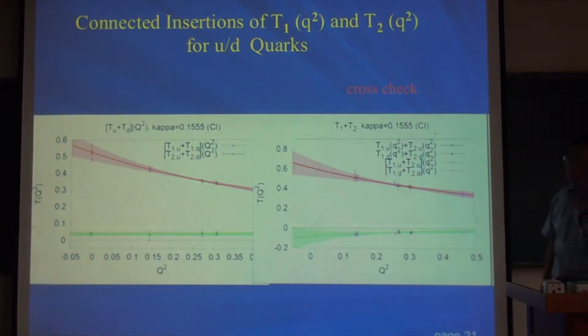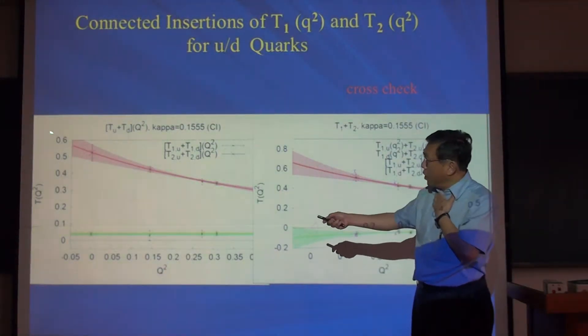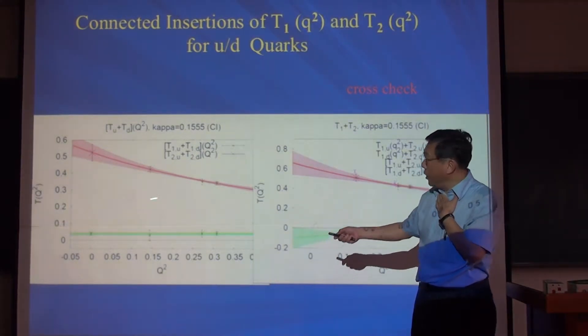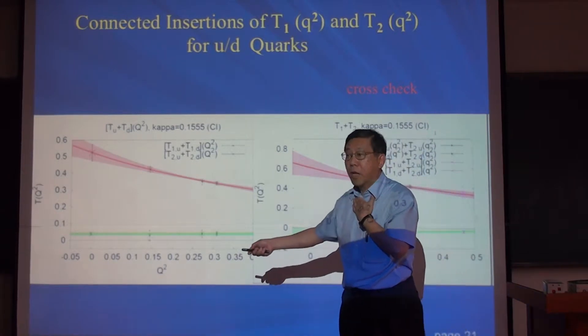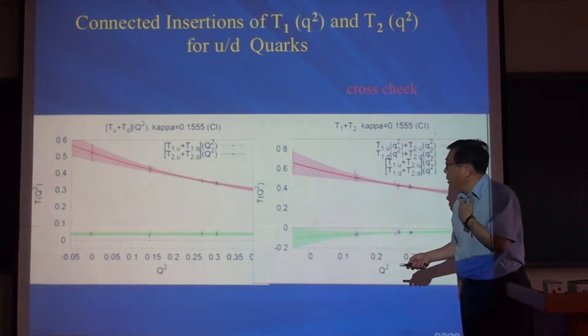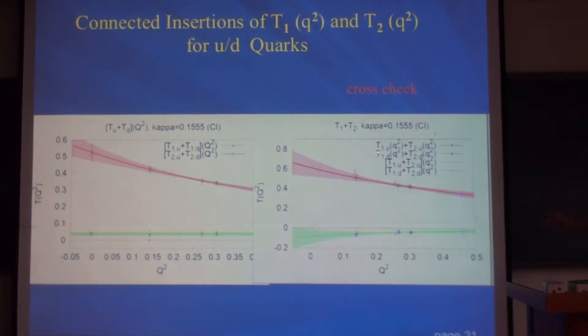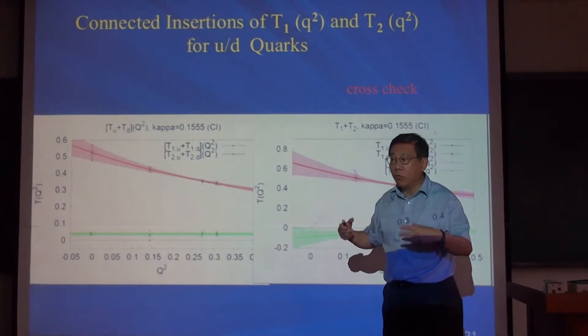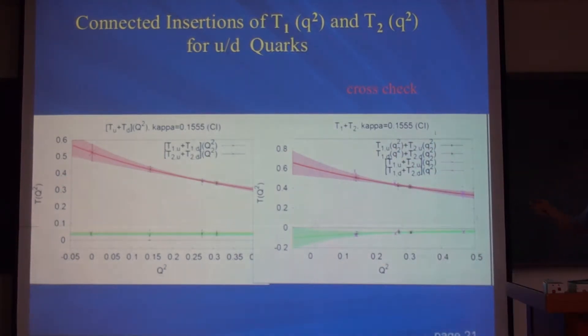Here's what we get. As far as form factors are concerned, as a function of Q squared, T1 looks like this. T2 is rather flat. Indeed, T1 has a curvature and T2 does not. So I cannot combine them and fit. I have T1 and T2 extrapolate separately and add them together. That's a cross-check that our extraction of T1 and T2 for U and D separately are reasonable. This is for the connected insertions.